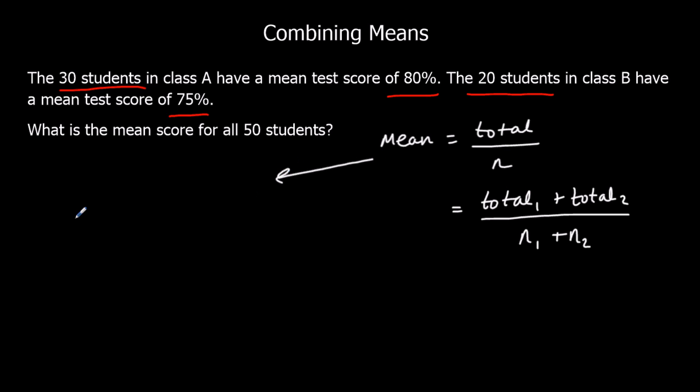So in order to work out the total, we times by n. So total is mean times how many. So the total in class A, I'll put total A, is going to be the mean of class A, which is 80, times how many in class A, which is 30. So 80 times 30 gives us the total in class A. So the total score, all the percentages in class A added up, makes 2400.